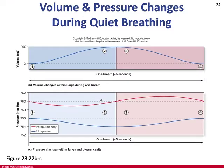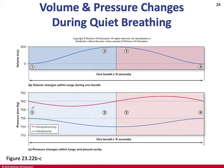During one normal breath, lung volume increases on inspiration and decreases on expiration. Intrapulmonary pressure drops as we breathe in and equalizes with atmospheric at the end of each cycle, then rises as we breathe out. Intrapleural pressure remains below intrapulmonary pressure at all times, dropping as we inhale and rising as we exhale, keeping the lungs inflated.